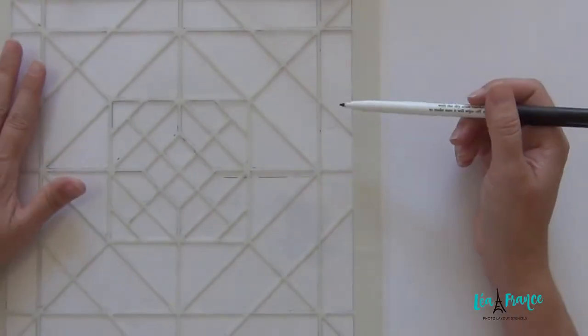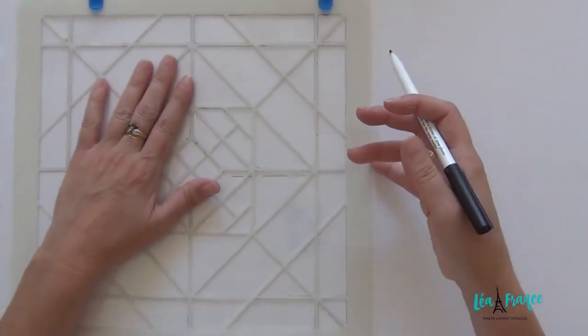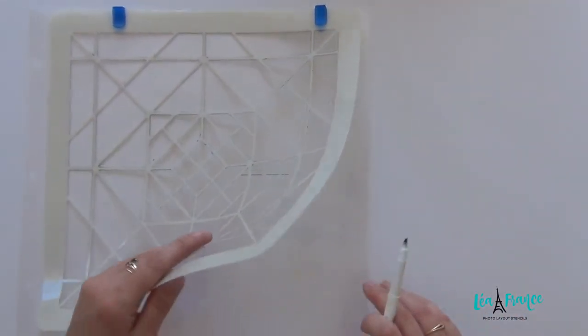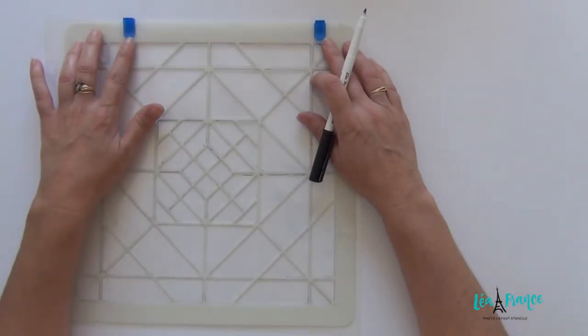So what I did is I grabbed my stencil, my quilt stencil and a plastic sleeve and I clipped at the top.